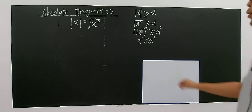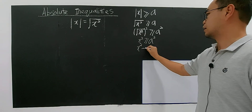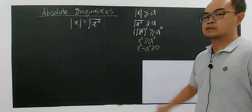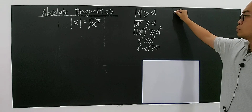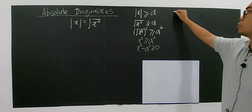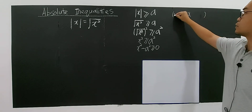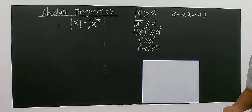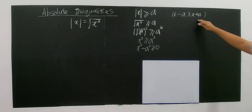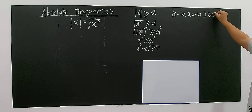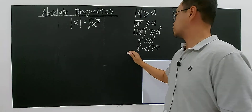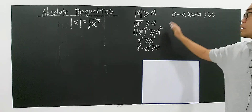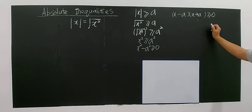Now you're going to treat this like a quadratic — it's a difference of squares. So you have x squared minus a squared greater than or equal to zero, which factors as (x minus a)(x plus a) greater than or equal to zero. You learned the formula: a squared minus b squared equals (a minus b)(a plus b). So x squared minus a squared equals (x minus a)(x plus a) greater than or equal to zero.